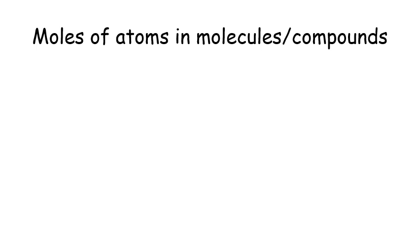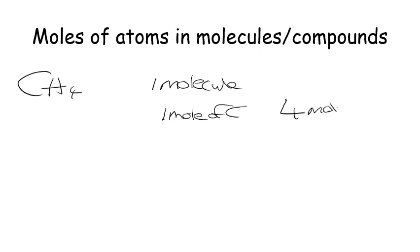When it comes to moles of atoms and molecules or compounds, it's a relatively straightforward process. So say we have something like CH4, methane. If we have one mole of methane, it means that we have one mole of carbon and we have four moles of hydrogen. We get those numbers just from the subscripts in the formula.